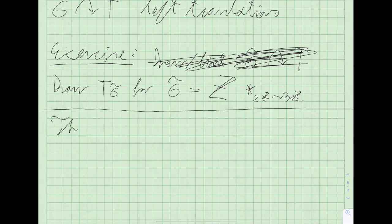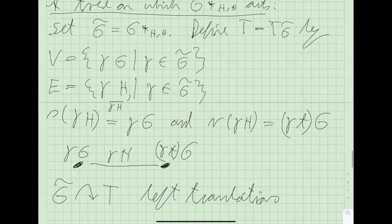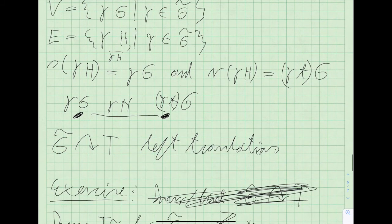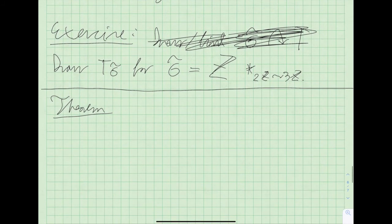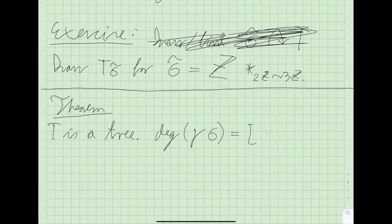Now I will just jump to a theorem. The HNN extension indeed acts on this graph by tree isomorphisms. The facts are: T is indeed a tree — something you prove by Britton's lemma and normal forms for HNN extensions. The degree of any vertex gamma·G is equal to the index of H in G plus the index of theta(H) in G.